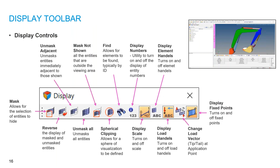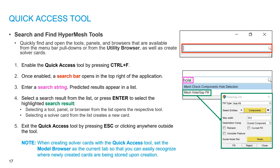There is a quick access tool for any options or processes. If you are in a panel or menu bar, press Control plus F to open the search bar. If you type a keyword — for example, 'hole' — it will show options like hole detection or mesh hole. Click on the result to use it, and press Escape to exit.